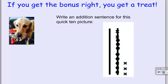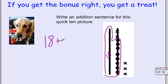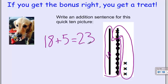Bonus time! If Scoop gets it right, she gets a treat. So we're going to look at a picture of quick tens and write an addition sentence. So I see a ten and some circle ones hooked on. So when I look at this, I see ten and eight ones, or eighteen. And now I see what I have left. I have three x's and two x's, which makes five. So my addition sentence is eighteen plus five equals twenty-three.